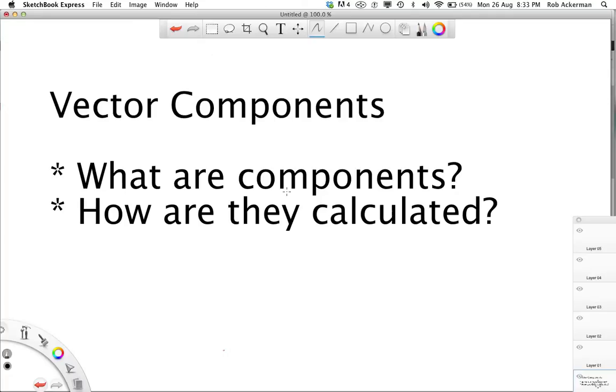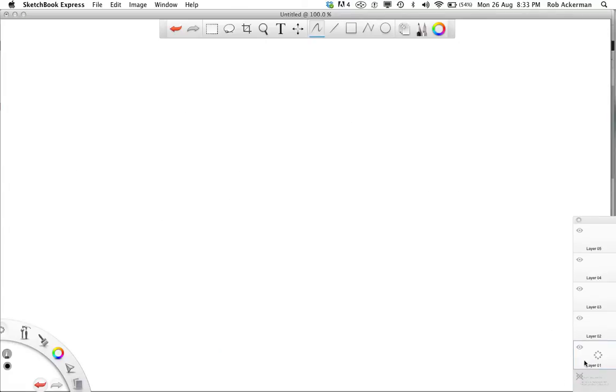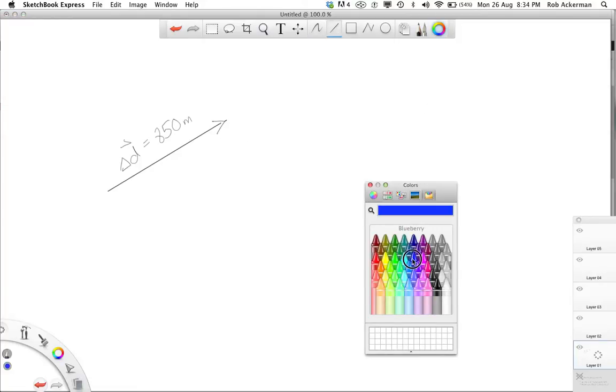So first of all, just think back to grade 11. In grade 11, you learned that vectors were these line segments that had a magnitude and a direction. So for example, you might have a vector that looks something like this. Maybe it's a displacement vector, the symbol delta d. As an example, I'm going to use 850 meters, but that's not all there is to it. If you're going to have a vector, you also have to have a direction. So I'm going to put in the north and the east axis.